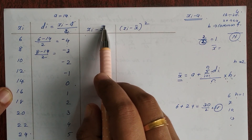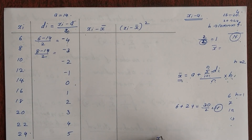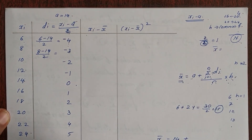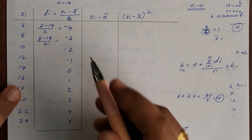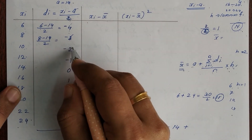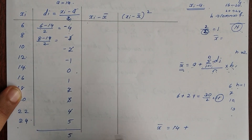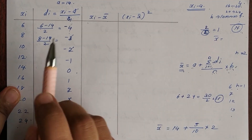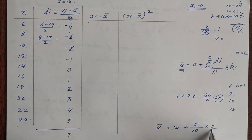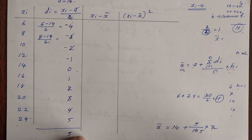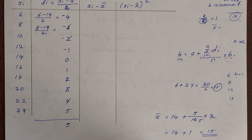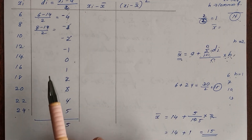Now we calculate x bar using the step deviation formula: x bar equals a plus summation di divided by n, multiplied by h. Here a equals 14, summation di equals minus 5 (adding all di values), n equals 10, and h equals 2. So x bar equals 14 plus (minus 5 divided by 10) multiplied by 2, which equals 14 plus 1, giving x bar equals 15. This confirms the mean using the step deviation method for ungrouped data.